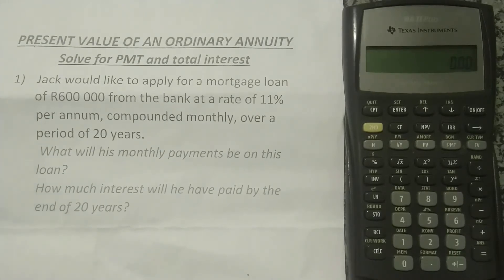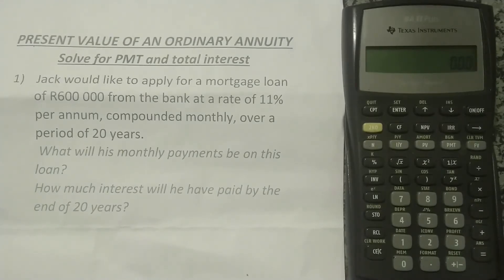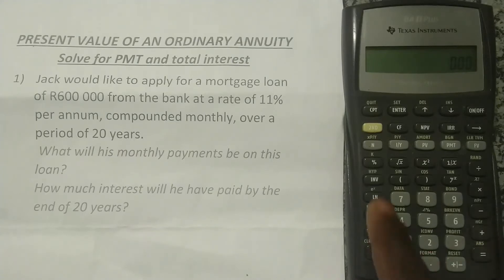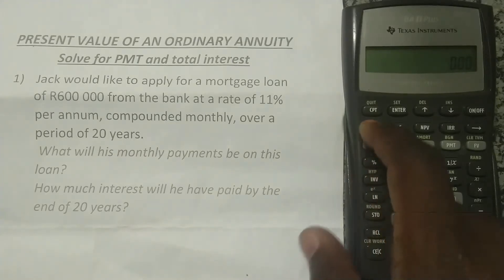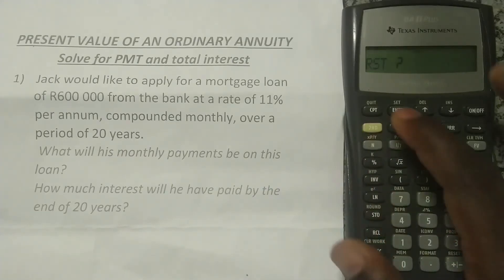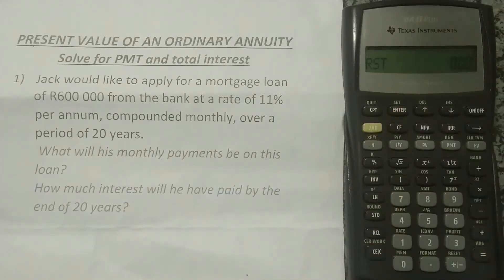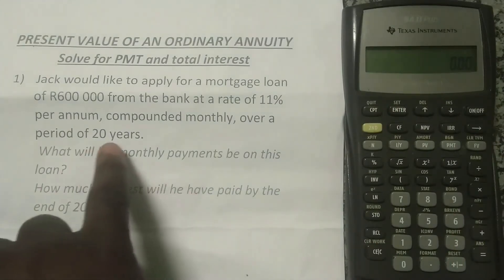If we know time value of money, that's the first thing we have to do — input all the elements. We want to make sure that we clear our calculator, so we press Second Function, plus/minus, and Enter, then C/CE to clear the screen.